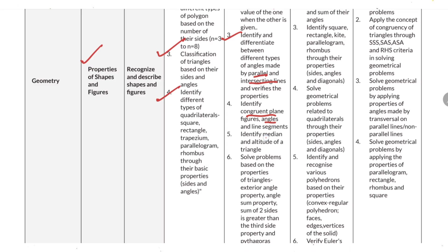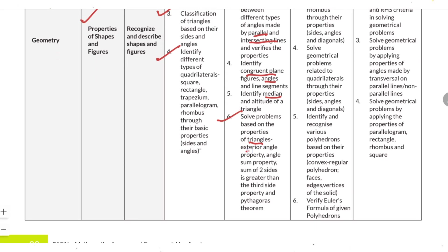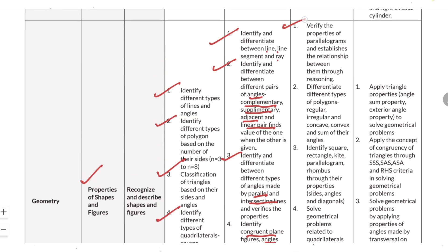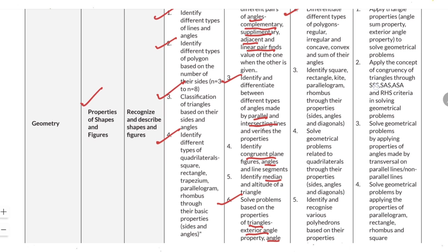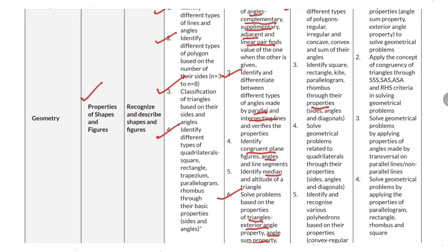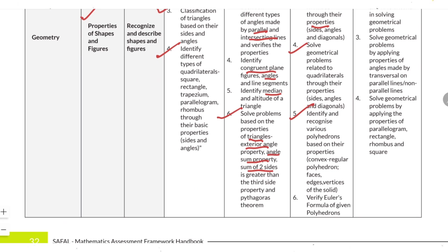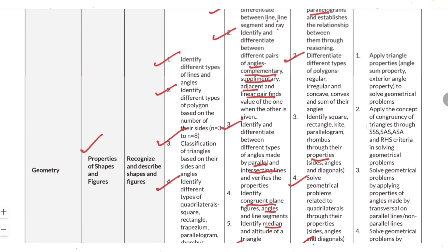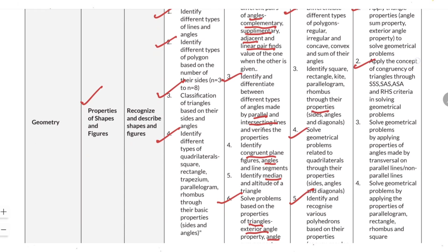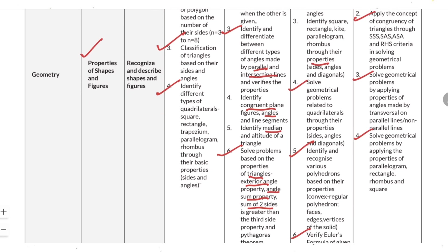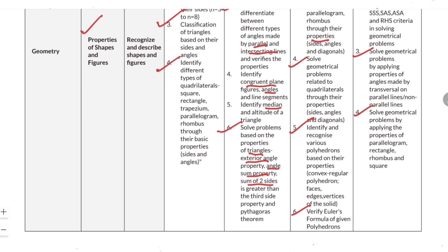Further topics include: identifying congruent plane figures and angles; identifying medians; solving problems based on properties of triangles such as exterior angle property, angle sum property, and the rule that the sum of two sides is greater than the third side; verifying properties of parallelograms and establishing relations; differentiating between types of polygons — regular, irregular, concave, convex; identifying square, kite through their properties; solving geometrical problems related to quadrilaterals; identifying polyhedra based on their properties; verifying Euler's formula; and applying triangle congruency (SSS, SAS, ASA), properties of angles made by transversals, and properties of parallelograms, rectangles, rhombuses, and squares.